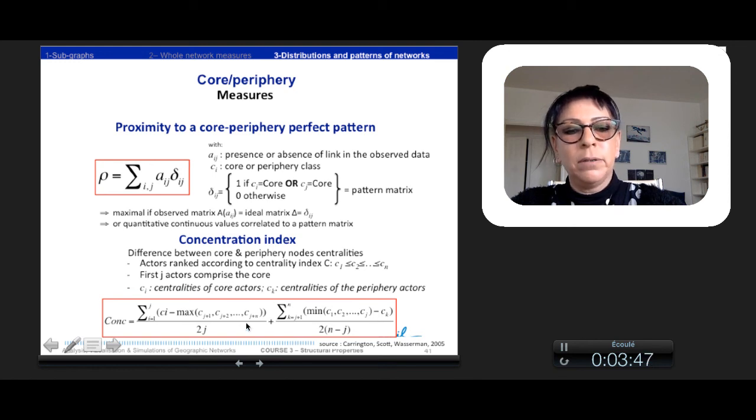All this is standardized. And so we have a concentration index. The more this index is high and the more the centrality is concentrated inside the core, beside the periphery.